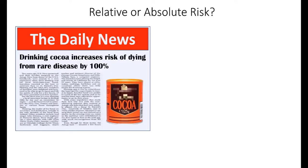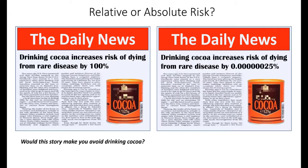Imagine a newspaper article with the headline: 'Drinking cocoa increases risk of dying from rare disease by 100%.' Would the story make you avoid drinking cocoa? Here's another story: 'Drinking cocoa increases risk of dying from rare disease by 0.0000000025%.' Would that story make you avoid drinking cocoa? The increased risk in the first case seems devastating, and in the second case appears negligible.